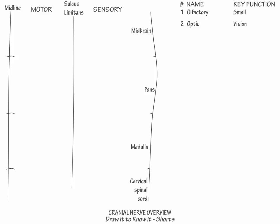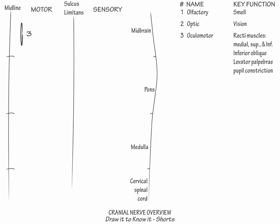Then in the medial motor area, in the rostral midbrain, draw cranial nerve 3, the oculomotor nerve, which innervates several extraocular muscles — the medial, superior, and inferior recti, and the inferior oblique and levator palpebrae — and also produces pupillary constriction.